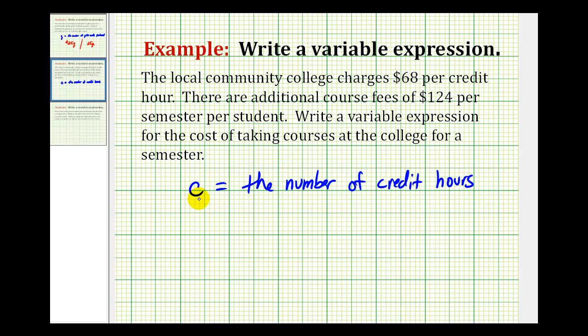For every credit hour it will cost $68. So the variable expression for the total cost for the semester would be $68 times the number of credit hours plus $124.